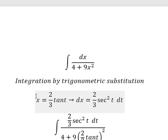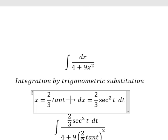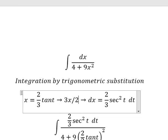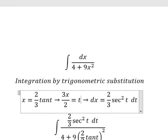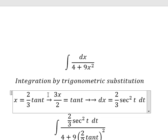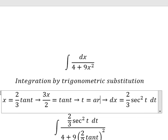So we need to divide both sides by 2 over 3. And we have 3x over 2 equals to tan t. And we have t equals to arctan.